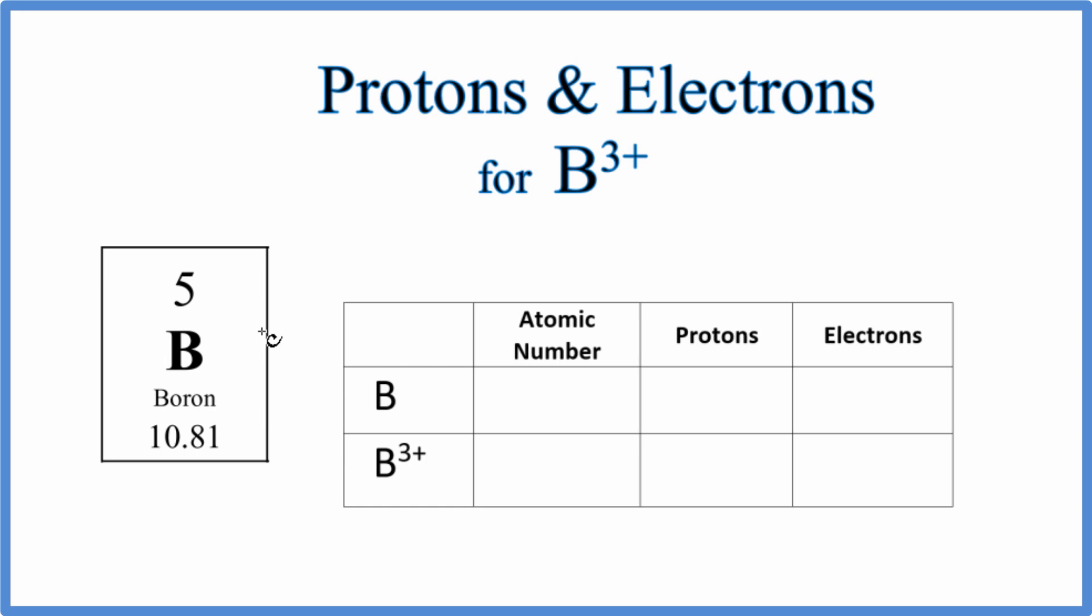Here on the periodic table when I look at boron, it has an atomic number of five. That atomic number equals the number of protons, so we know in our table here already we have an atomic number of five for boron and we have five protons.